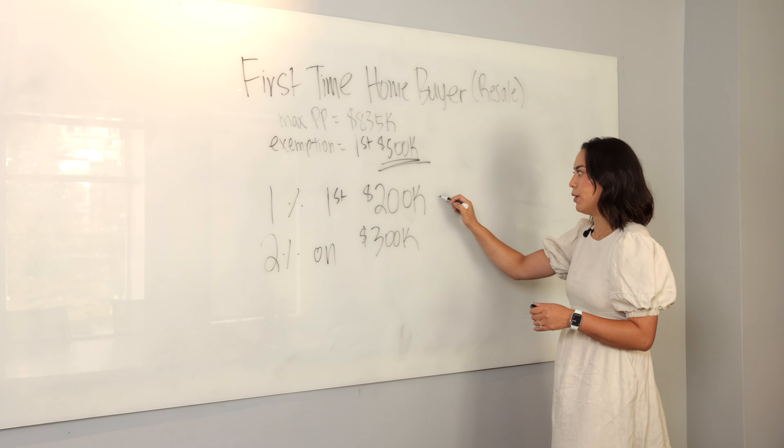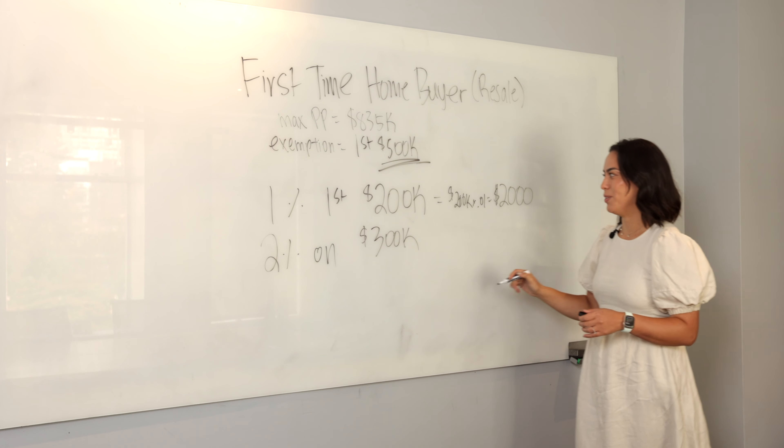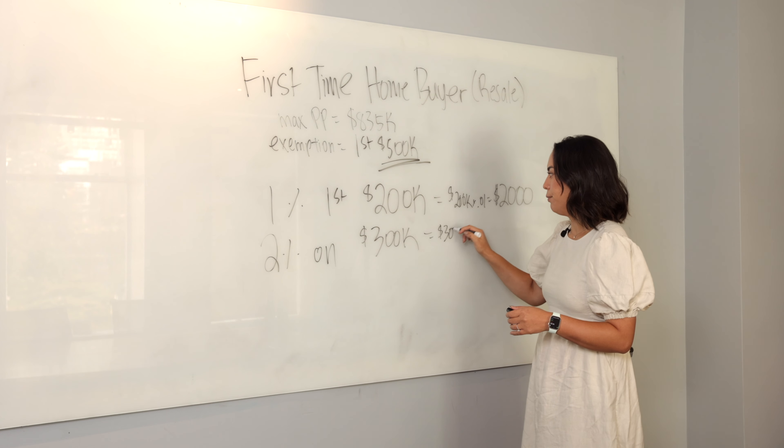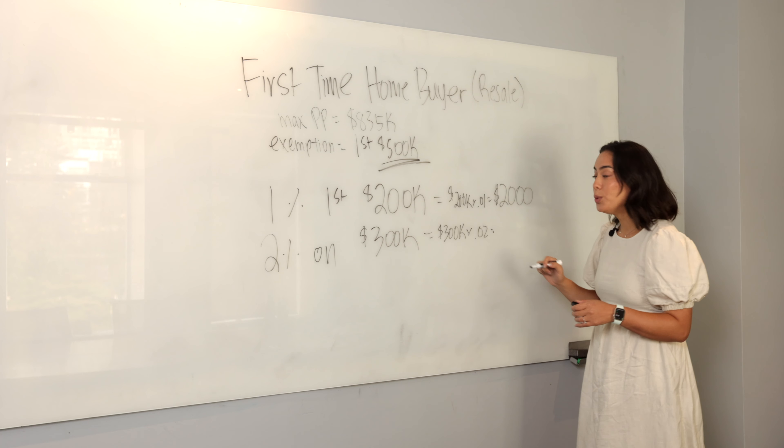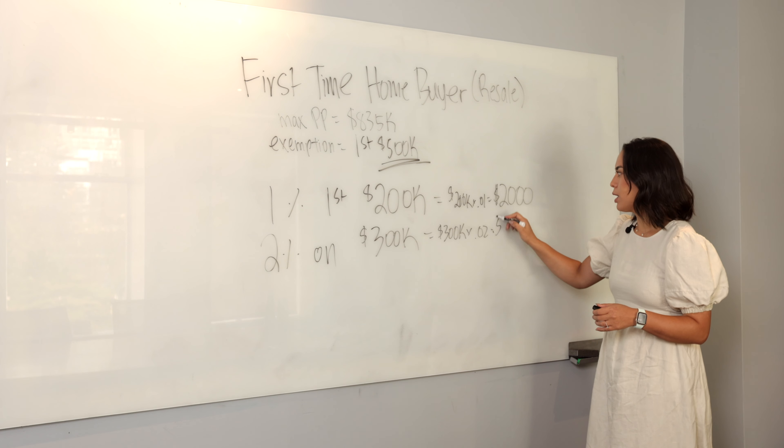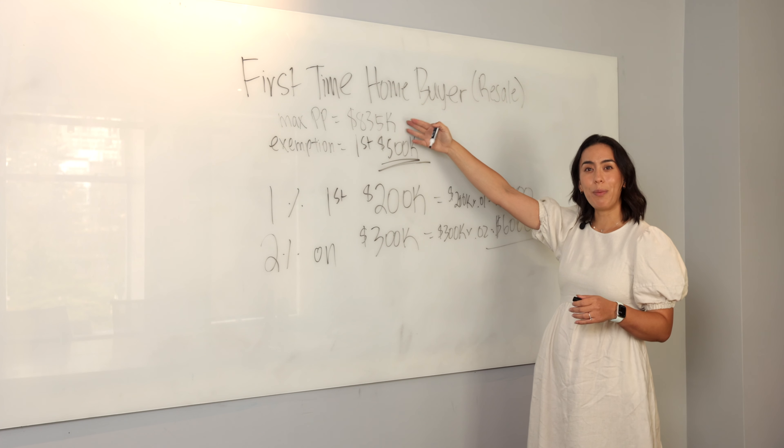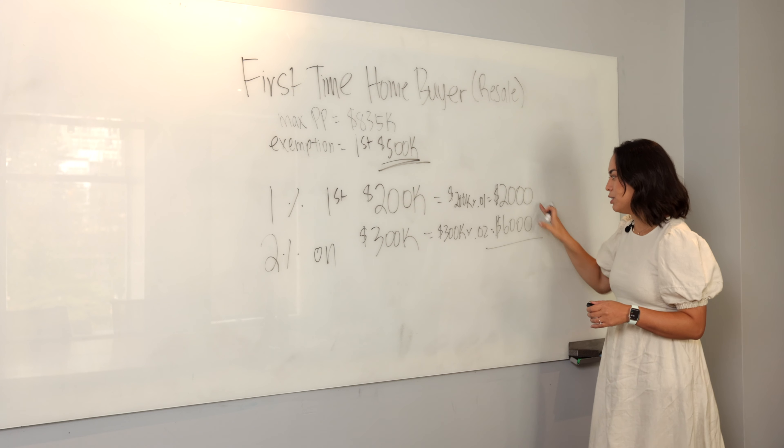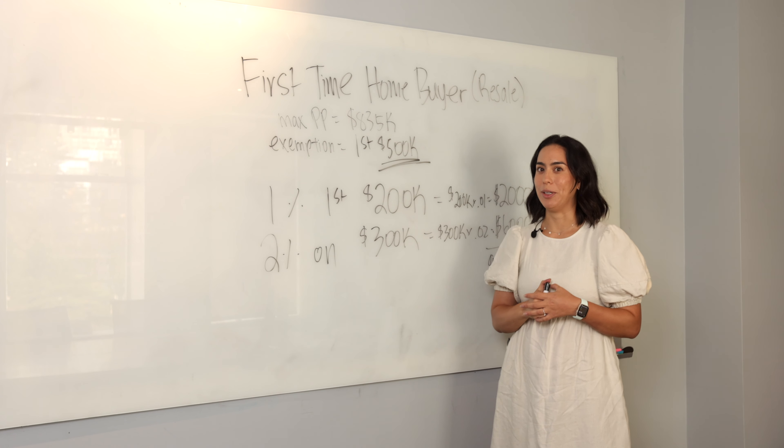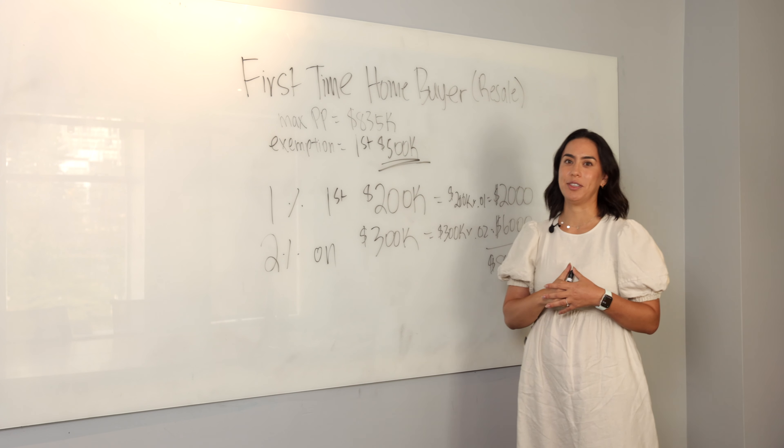1% on the first $200,000. How do you calculate that? $200,000 times 0.01, that means it's an amount of $2,000 for that base, same as always. Then we take $300,000, we multiply that by 0.02 for the 2%, that is $6,000. So how much can you save if you purchase the property under $835,000, which means the property qualifies and you qualify? $2,000 plus $6,000 is $8,000. That means you are going to be saving $8,000 in property transfer tax in the event that you qualify for this first-time home buyer exemption.